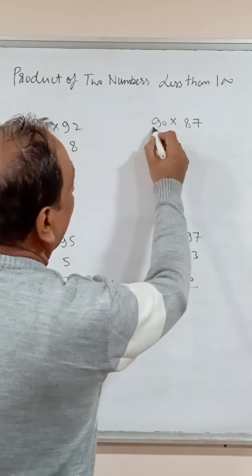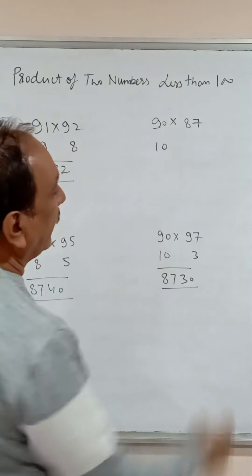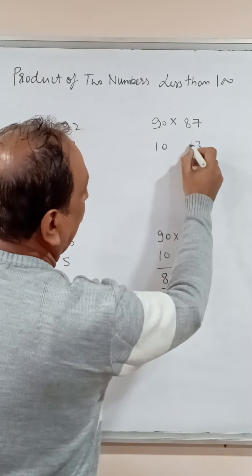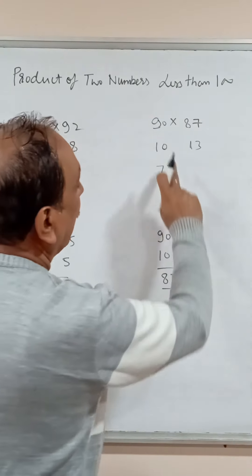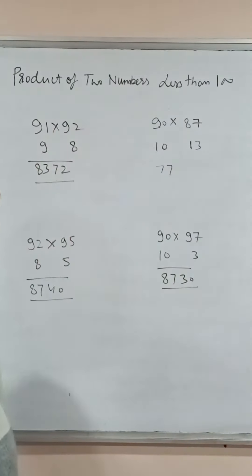Then 90 into 87. 90 is 10 small and 87 is 13 small. 90 minus 13 is 77. 10 times 13 equals 130. This is 3 digits.